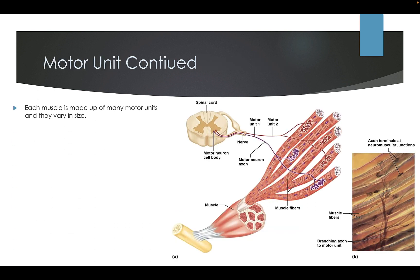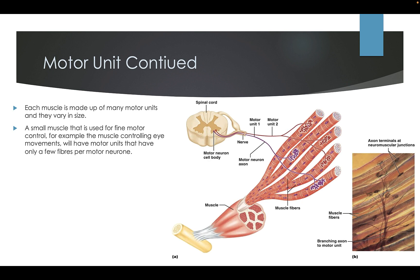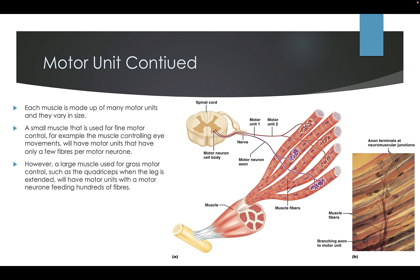Each muscle is made up of many motor units and they vary in size. A small muscle used for fine motor control, for example the muscles controlling eye movements, will have motor units with only a few fibres per motor neuron. However, a large muscle used for gross motor control, such as the quadriceps when the leg is extended, will have motor units with a motor neuron feeding hundreds of fibres. As we break down from the muscle into muscle fibres, within the muscle fibres we have our motor units. The message comes down the spinal cord, off the different vertebrae, travels along to the motor unit, and the motor neuron sends this message to the muscle fibres — they then contract, allowing movement to occur.